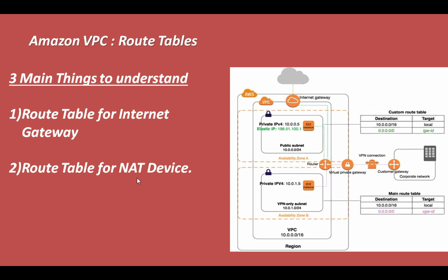The second type is the route table for NAT devices, which we will cover in more detail in subsequent videos. Basically, if you have devices in a private subnet that need to reach the internet but you don't want the internet to initiate connections back to those devices, you create a NAT instance or NAT device. Traffic from the private subnet is forwarded to the NAT device, which then forwards it to the internet. Return traffic from the internet goes to the NAT device, which forwards it back using the port number of the original connection.